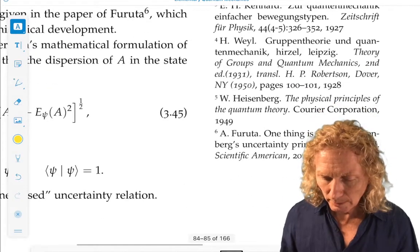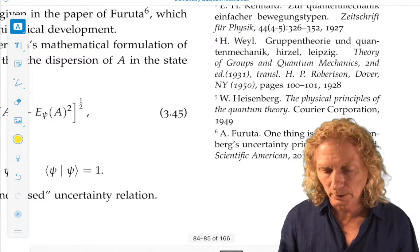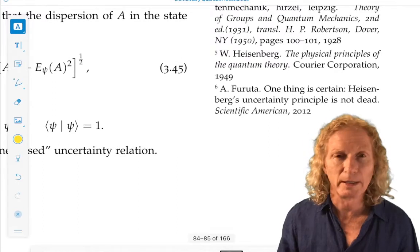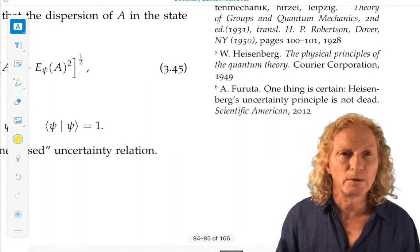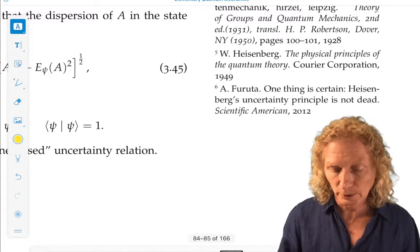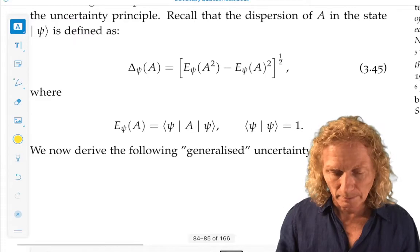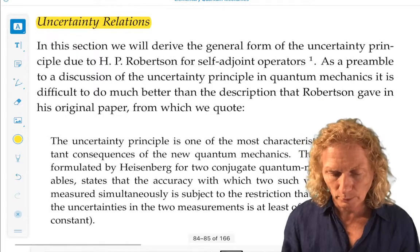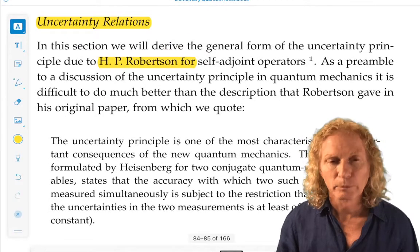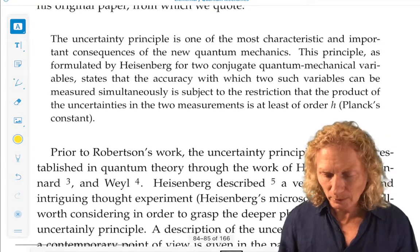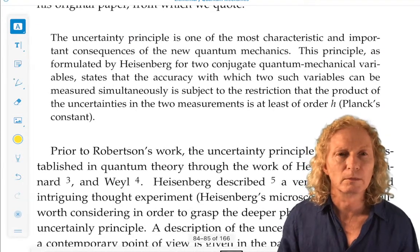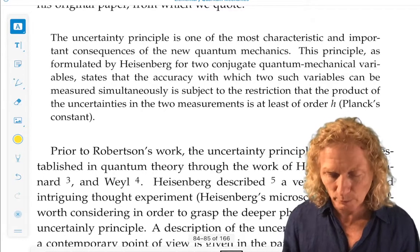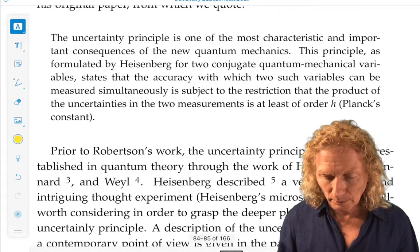And there's a relatively recent popular paper in Scientific American, by Furuta, called One Thing is Certain, Heisenberg's Uncertainty Principle is Not Dead. And, indeed, applications and generalizations of it are still in use and searched for today. So, the Robertson uncertainty principle is what we're going to be looking at here. And in describing that principle, it's really hard to do better than the original statement of Robertson from his paper. And so, I've lifted it from his paper, with proper attribution, of course. And it's stated here.